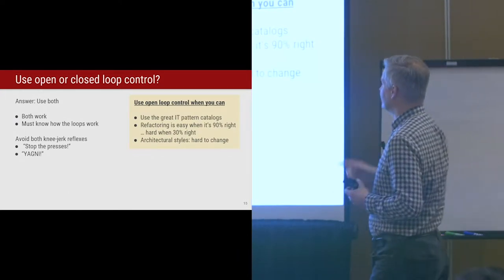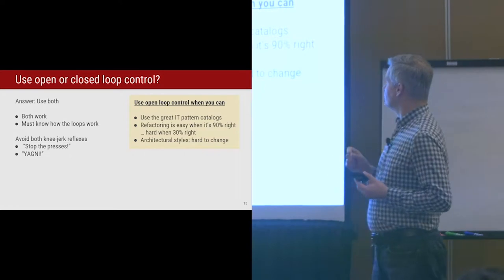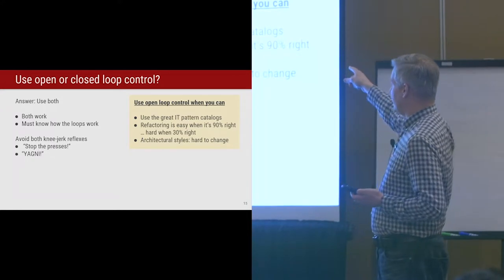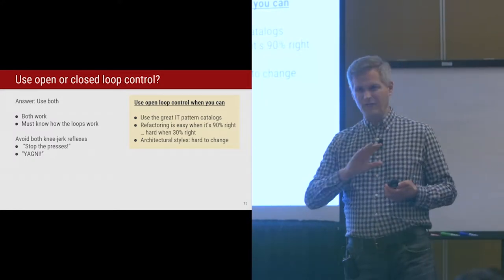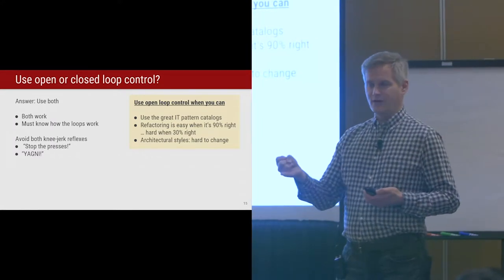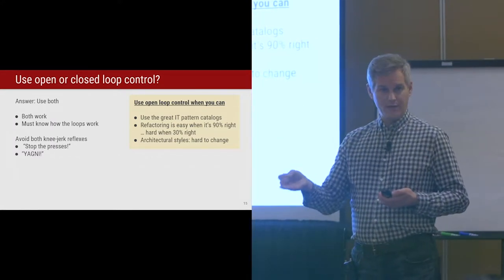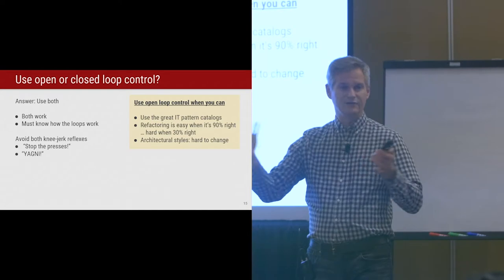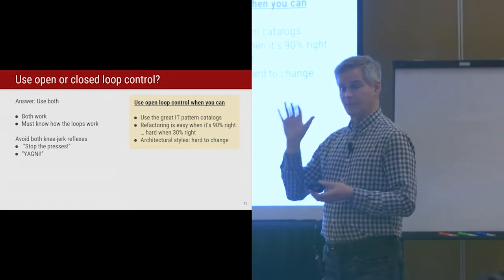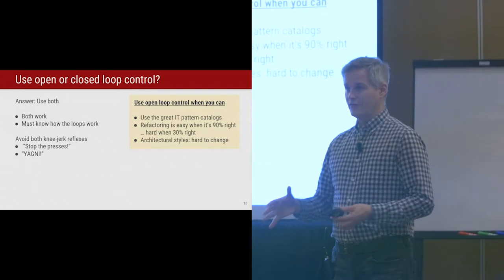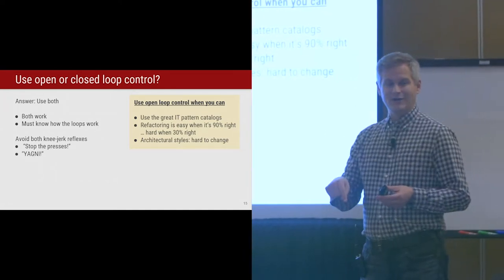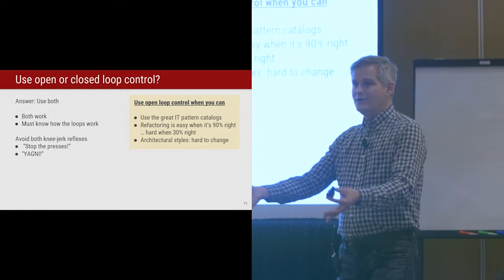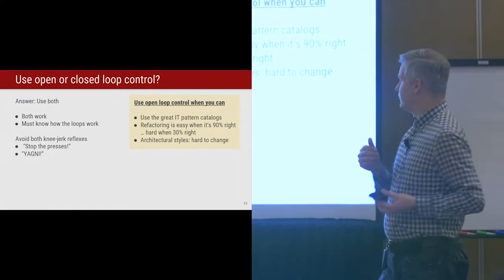My first conclusion: use open loop control when we can afford to do that. My experience is that the pattern catalogs for IT systems specifically are fantastic. You've got Fowler's enterprise application patterns, the Gregor Hoppe catalog of patterns, the works from the SEI including documenting software architectures, and the patterns of software architecture books. If you just read those books and said you could only use the patterns in here, you could probably solve almost all of your IT system challenges. Choosing between the patterns is still hard, but the menu is in front of you.